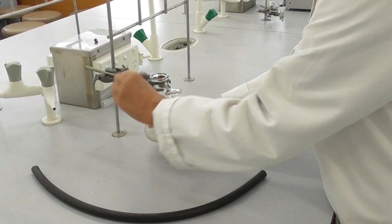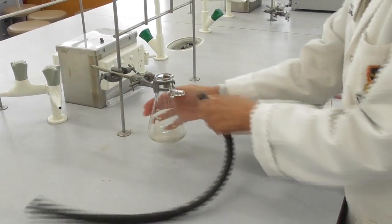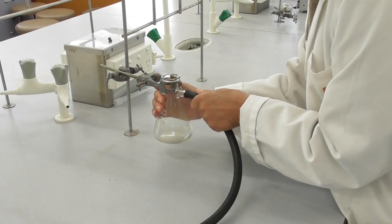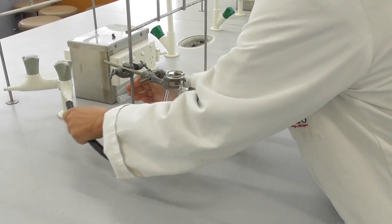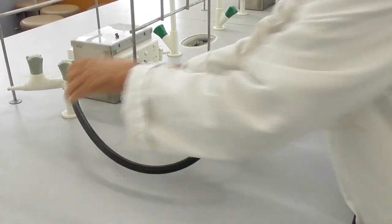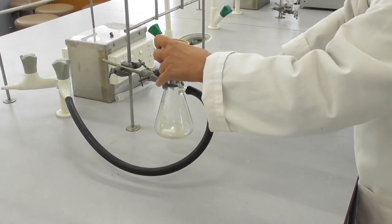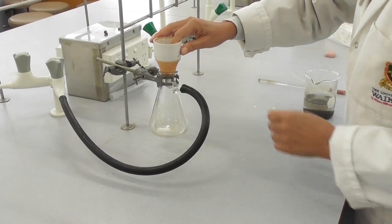The next step is to set up the vacuum filtration. I clamp my vacuum flask, attach the vacuum hose, attach the other end to the vacuum outlet. I take my Büchner funnel, put it on top of the flask and add my filter paper.